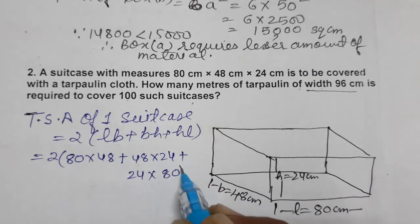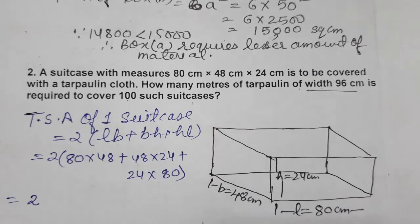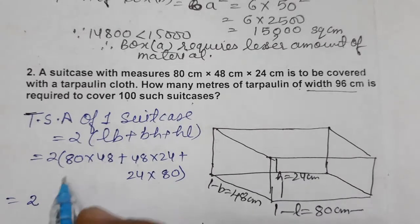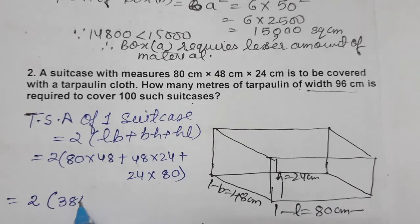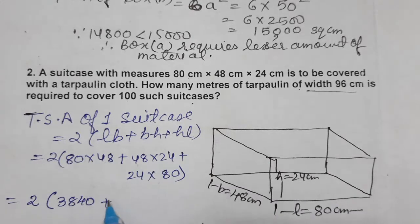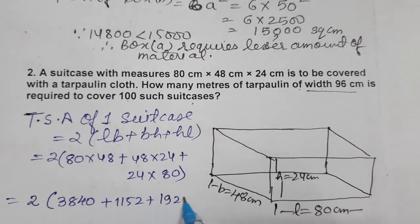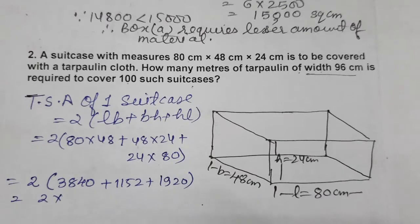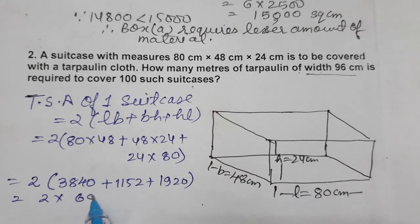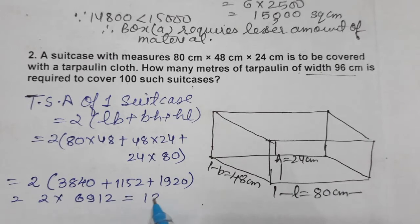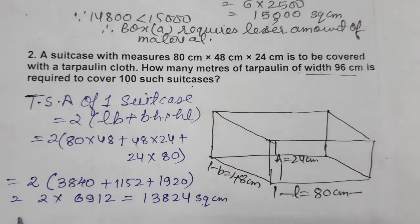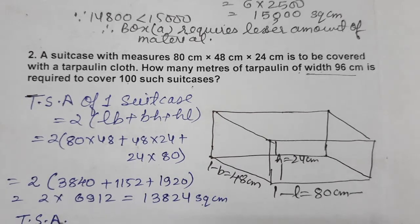So we have 2(80×48 + 48×24 + 24×80). Let's multiply: 3840 plus 1152 plus 1920. Now let's add them. On adding we get 6912. So 2 times 6912 equals 13,824 square centimeters.